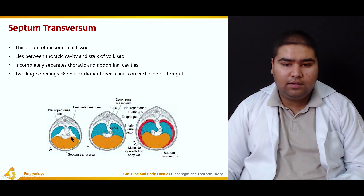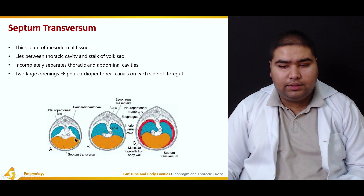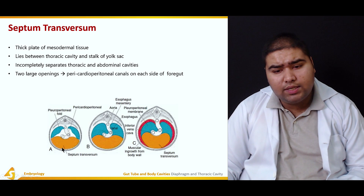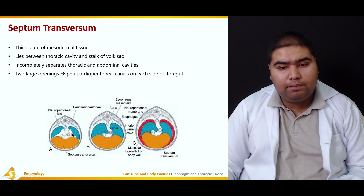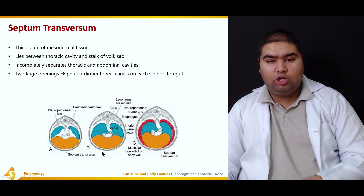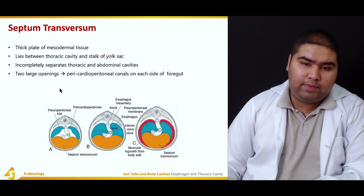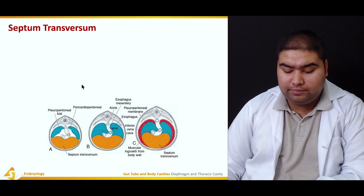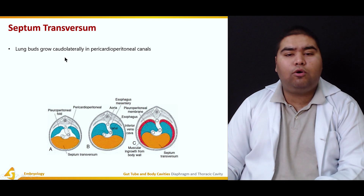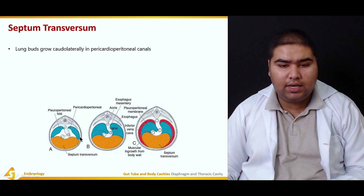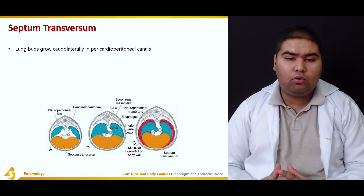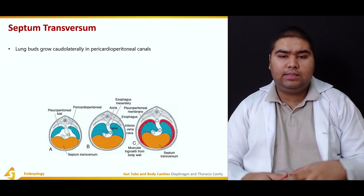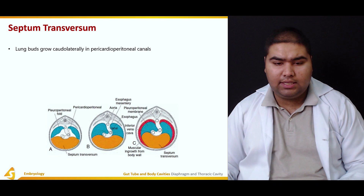This is the foregut. This is the septum transversum, and these are the pericardio-peritoneal canals on each side of the foregut. Lung buds grow coronolaterally in the pericardio-peritoneal canals. In this region, the lung buds tend to grow coronolaterally towards the body cavity.